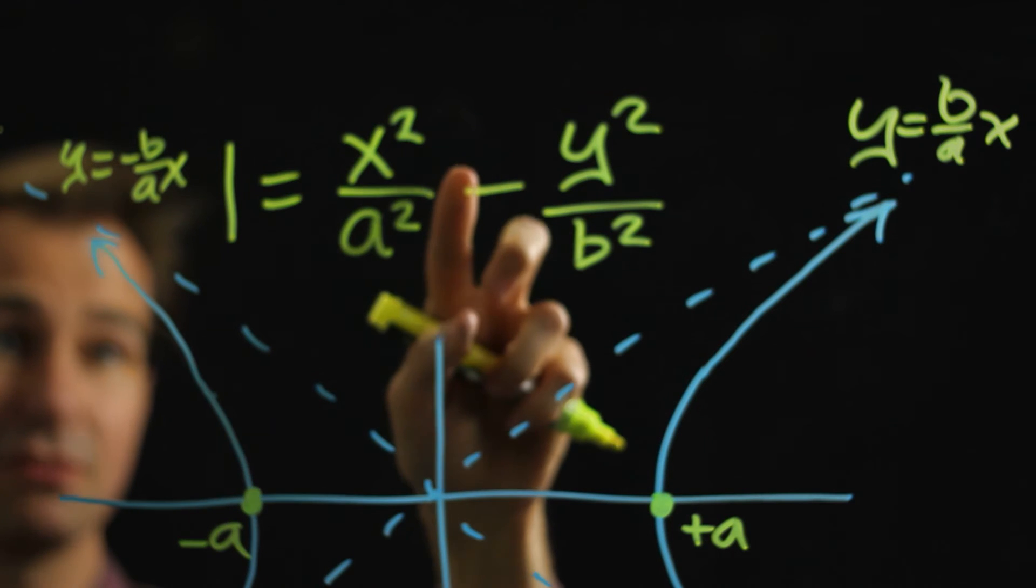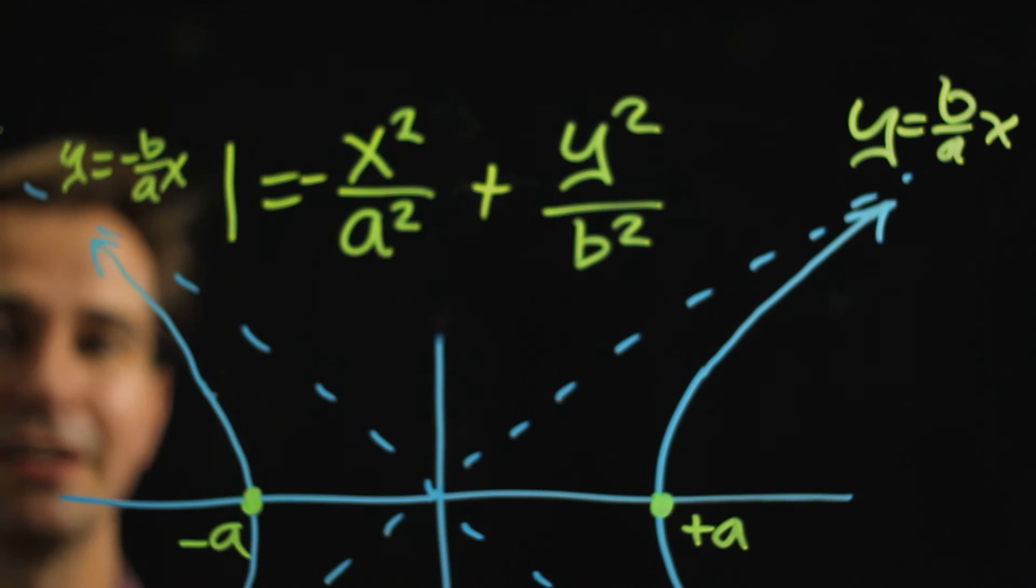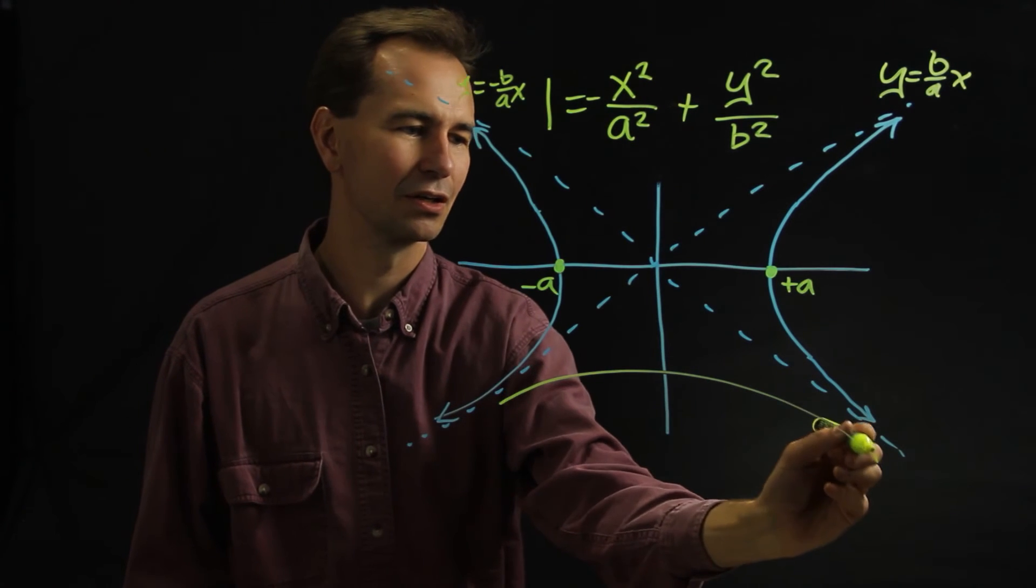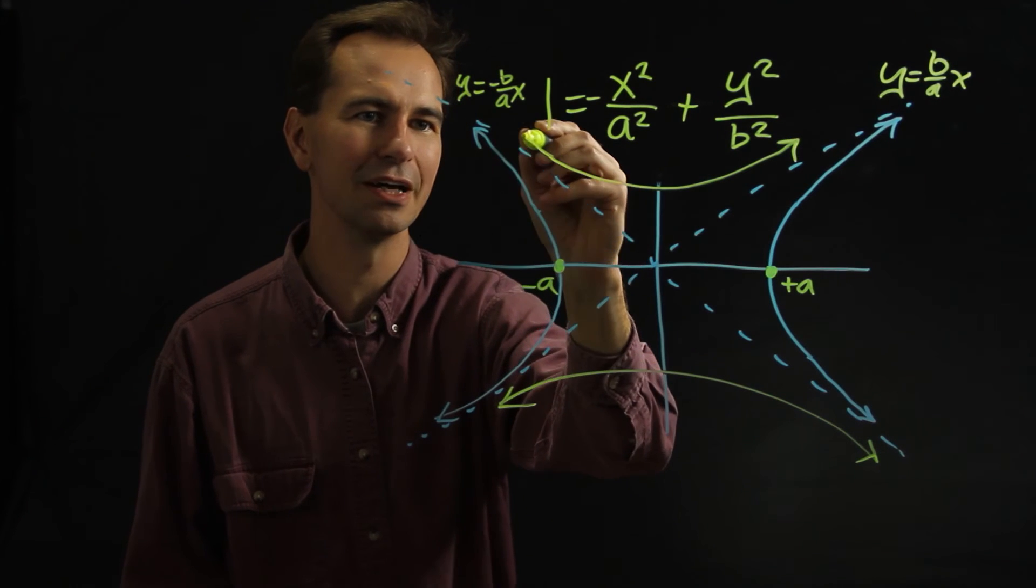Now sometimes you might see it where the minus sign is in front of the x instead of in front of the y. If that happens then it's just telling you that the hyperbola goes up and down instead. So you'd have a hyperbola that looks like this rather than the blue line.